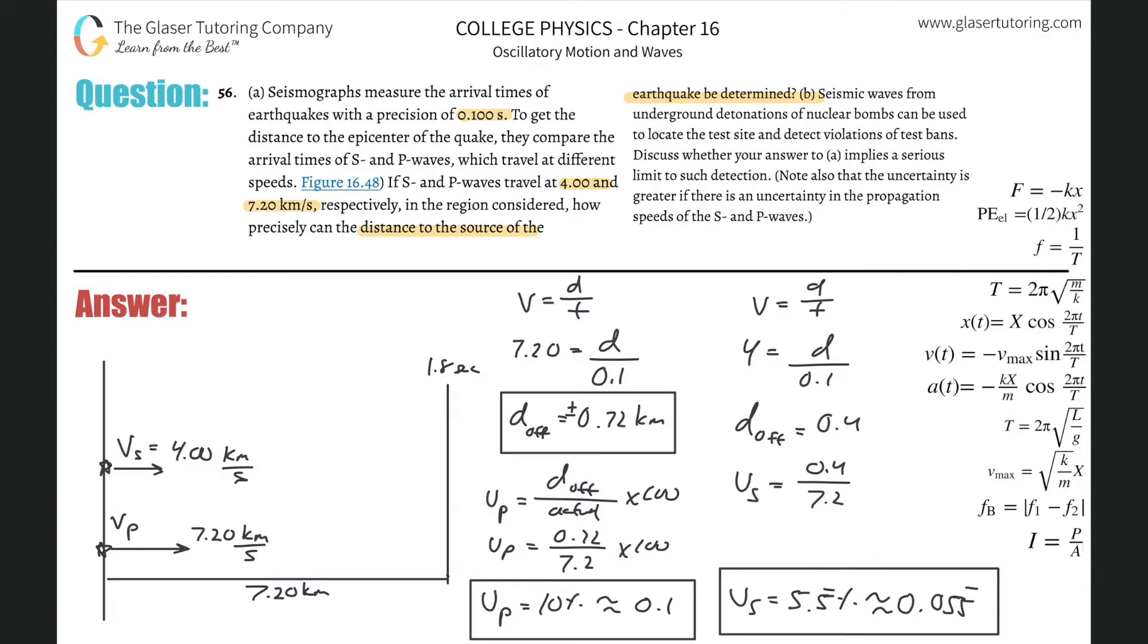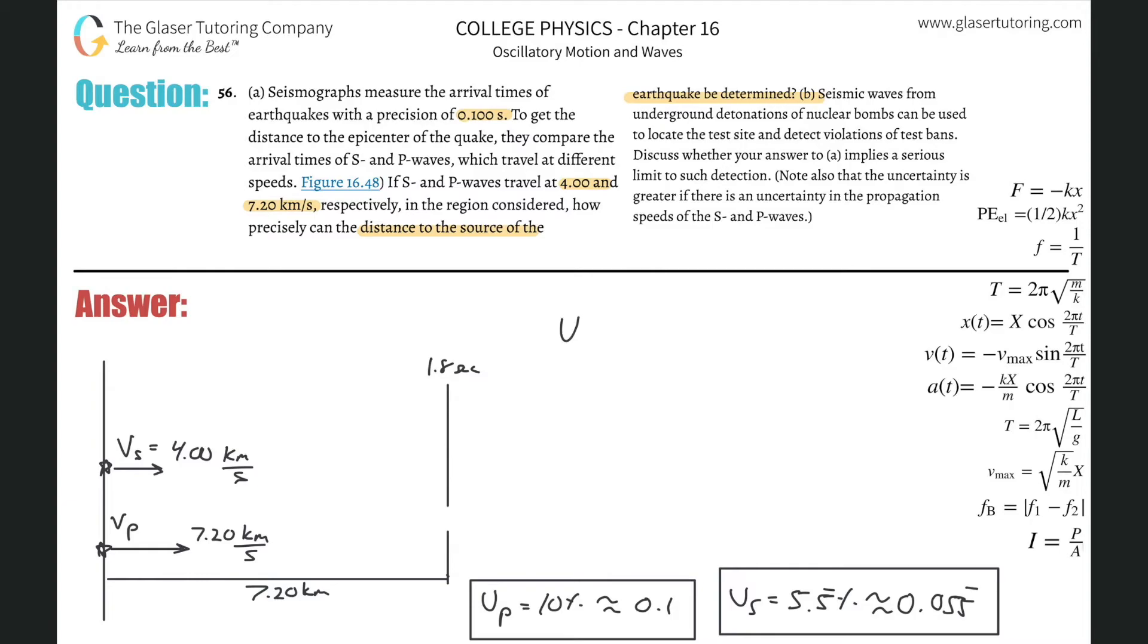Now you have to remember that the total uncertainty in a measurement is going to be the uncertainties of all the individual pieces summed together. So the total uncertainty, U sub T, is going to be the uncertainty measured for the P wave plus the uncertainty measured for the S wave. So the total uncertainty here will be equal to 0.155 repeating. So this is the total uncertainty now for the measurement. And this would be equivalent to about 15.5 repeating percent.